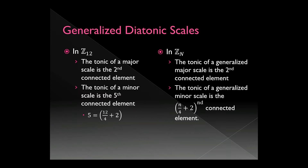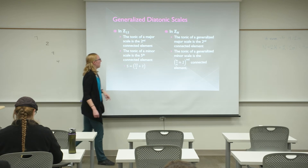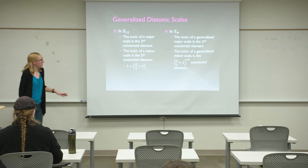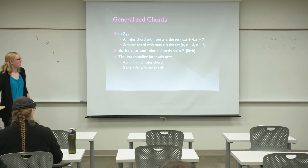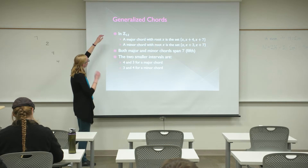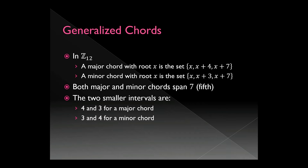In Z12, the tonic of the major scale is the second connected element. In ZN, the tonic of the generalized major scale is also the second connected element. In Z12, a major chord with root X is {X, X+4, X+7} and a minor chord with root X is {X, X+3, X+7}.